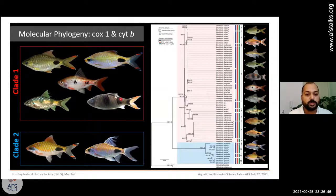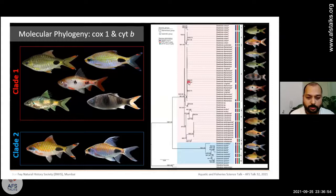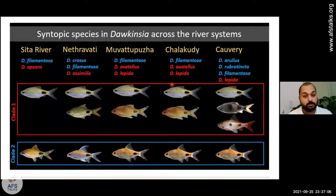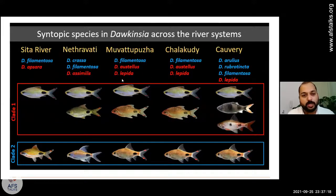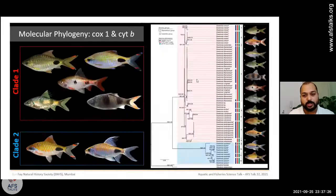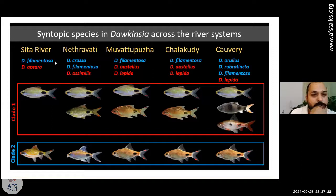It was beyond our understanding why this pattern was occurring. To the naked eye or layman, fish like D. aurelius, D. tamraparnii, and D. srilankensis look quite different from other species. They are morphologically different with different coloration patterns. To analyze this further, we carried out a thorough investigation, examining almost 500 fish specimens. We also realized that in each river system in the southern Western Ghats, we were seeing fish from both Clade 1 and Clade 2.